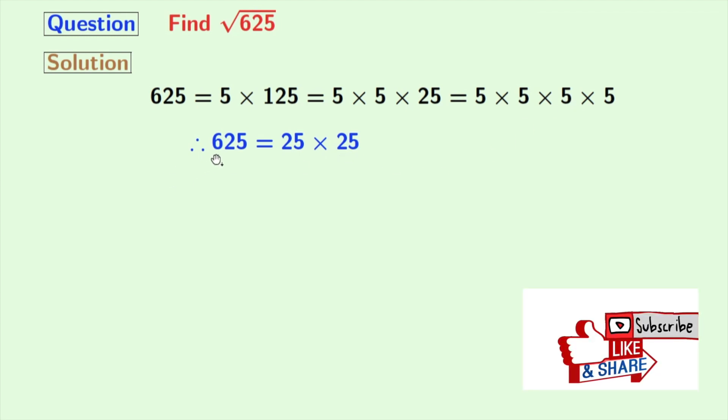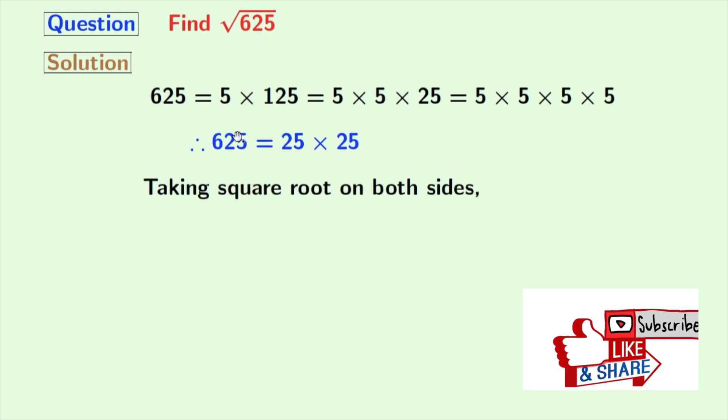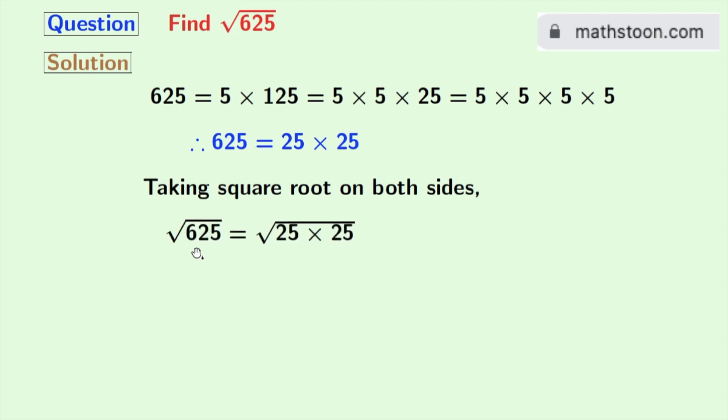So we get 625 is equal to 25 times 25. Now taking square root on both sides, we get root over 625 is equal to root over 25 times 25.